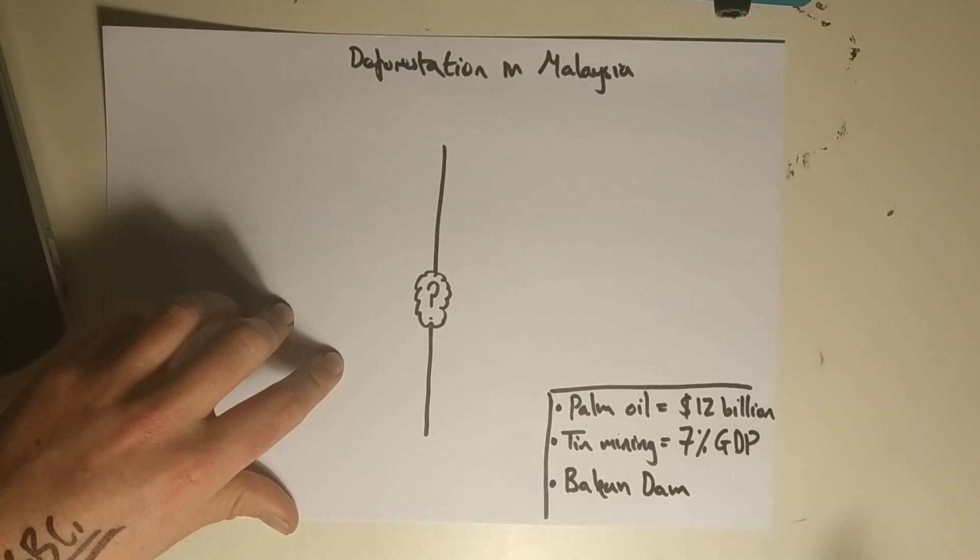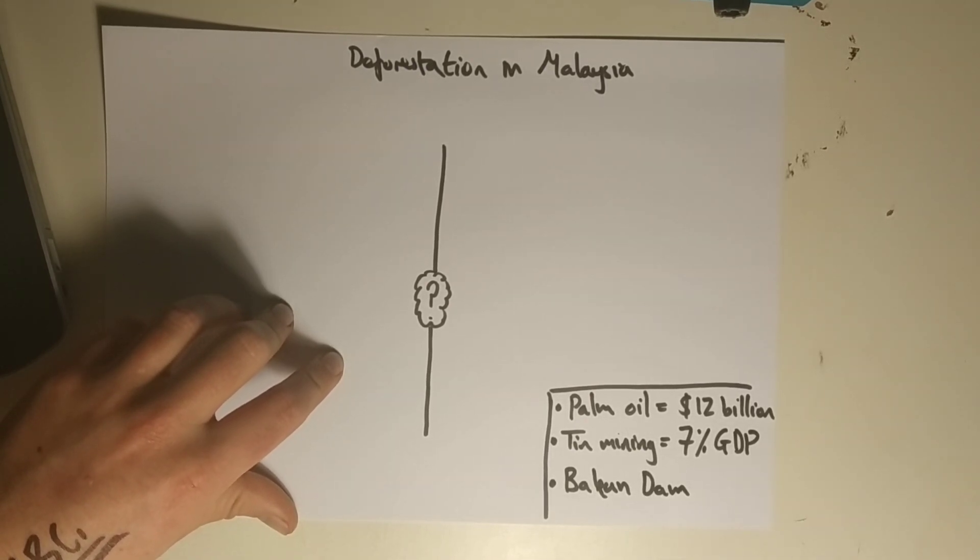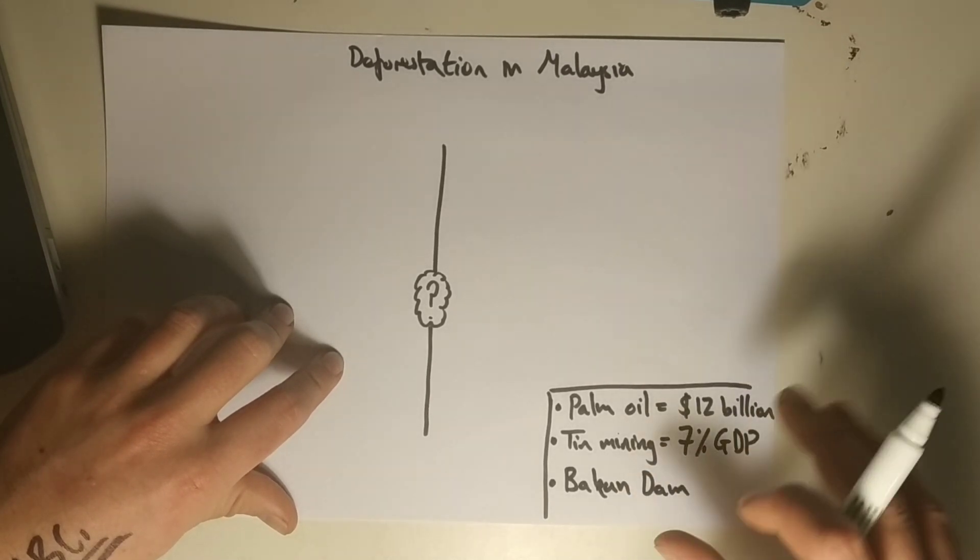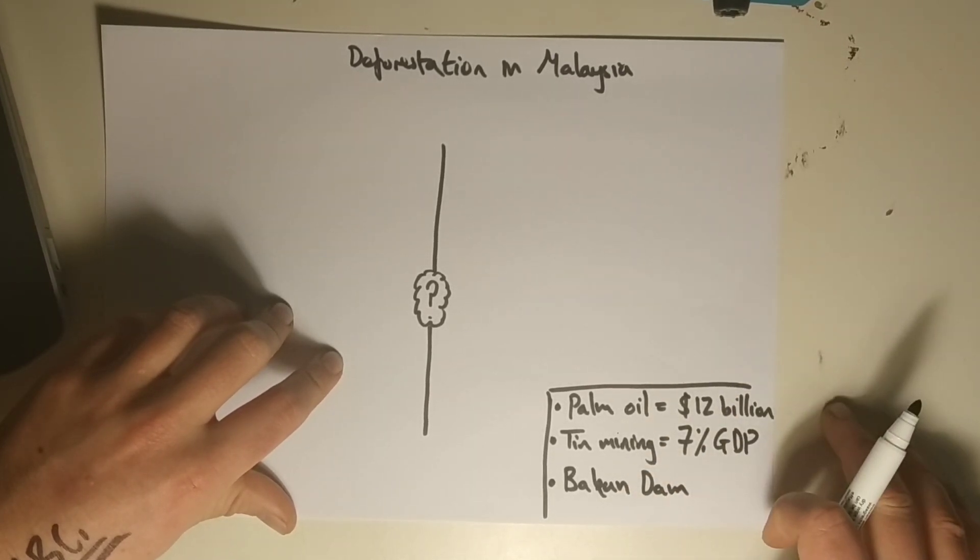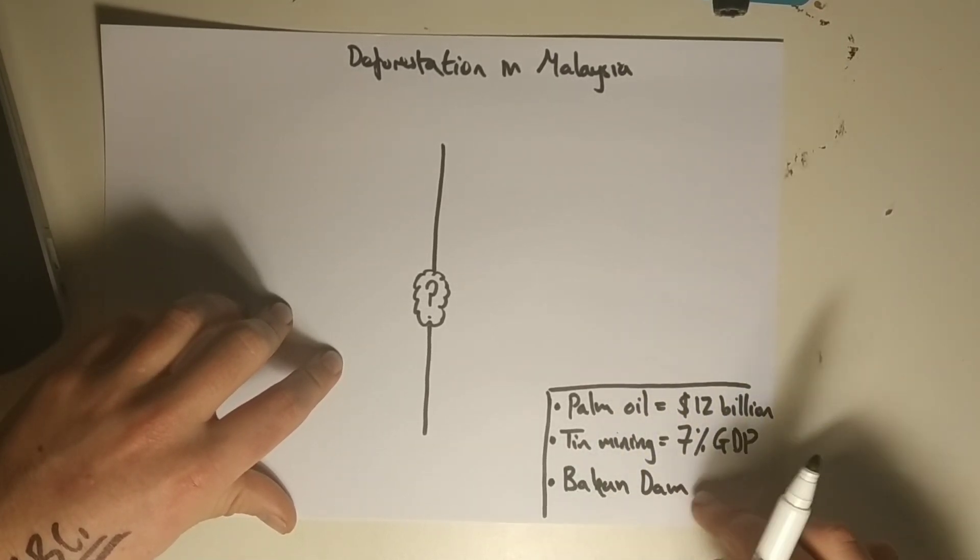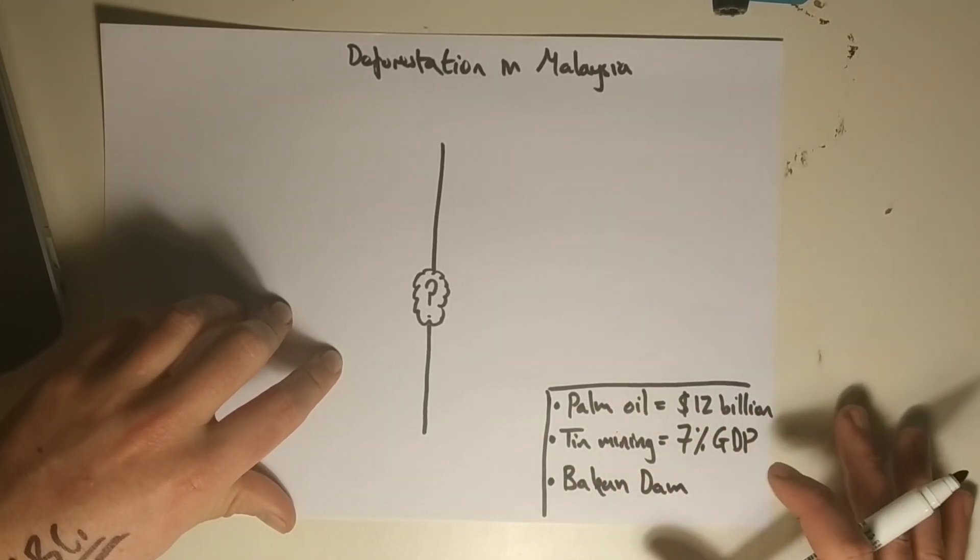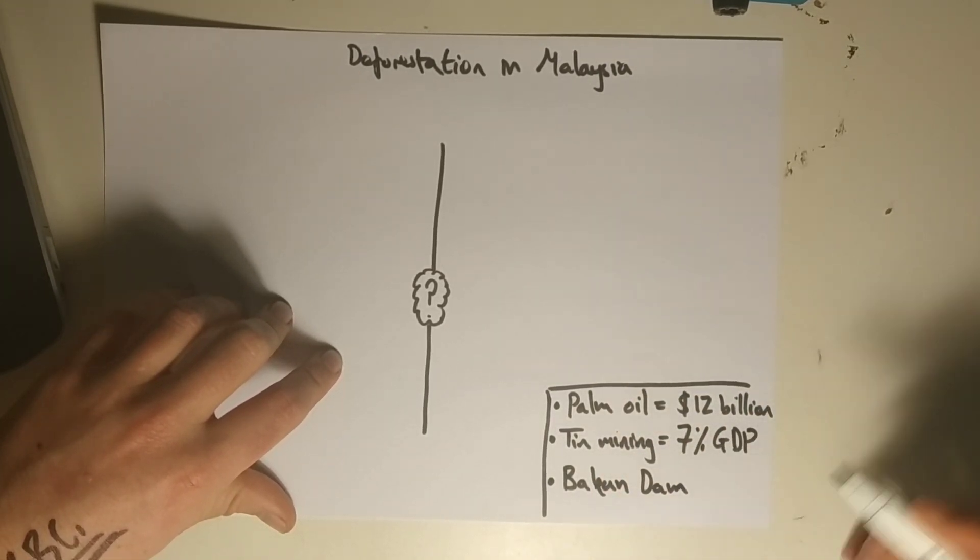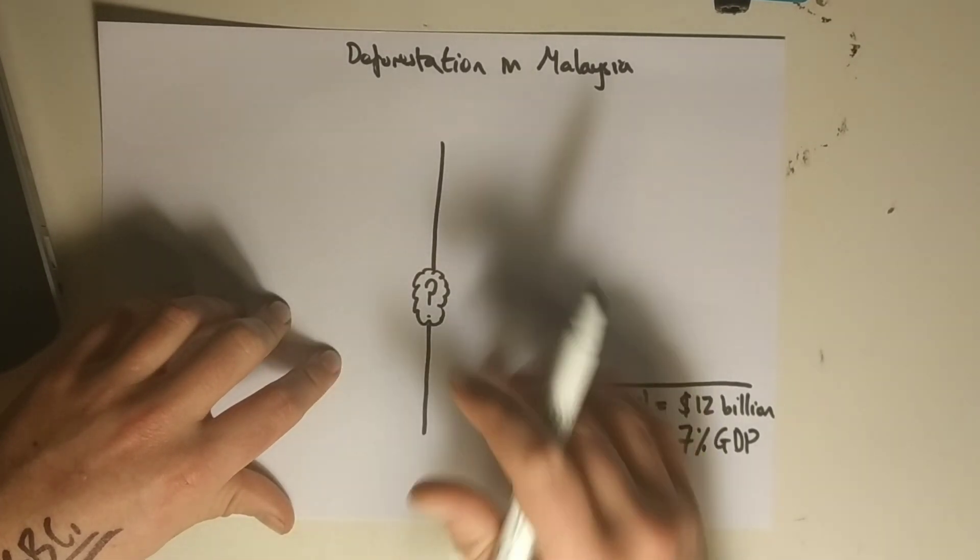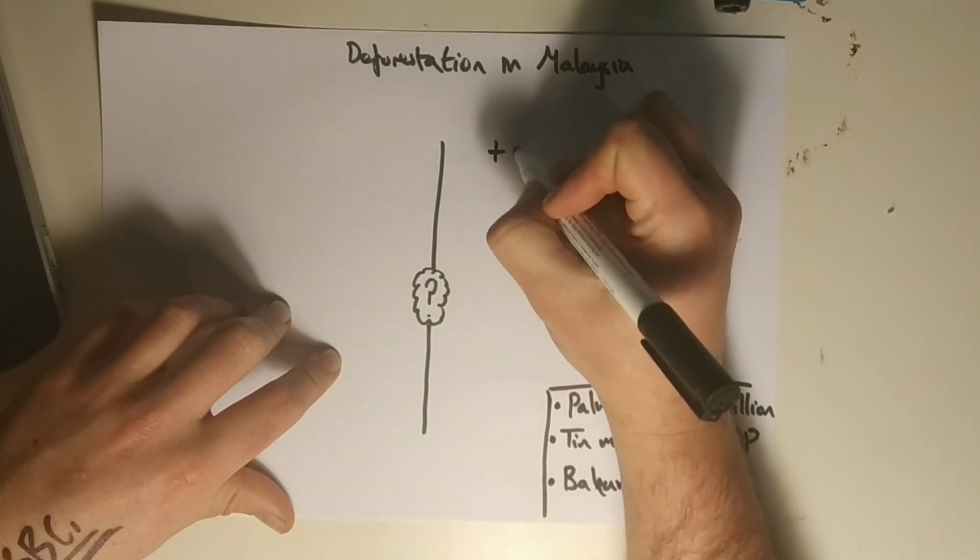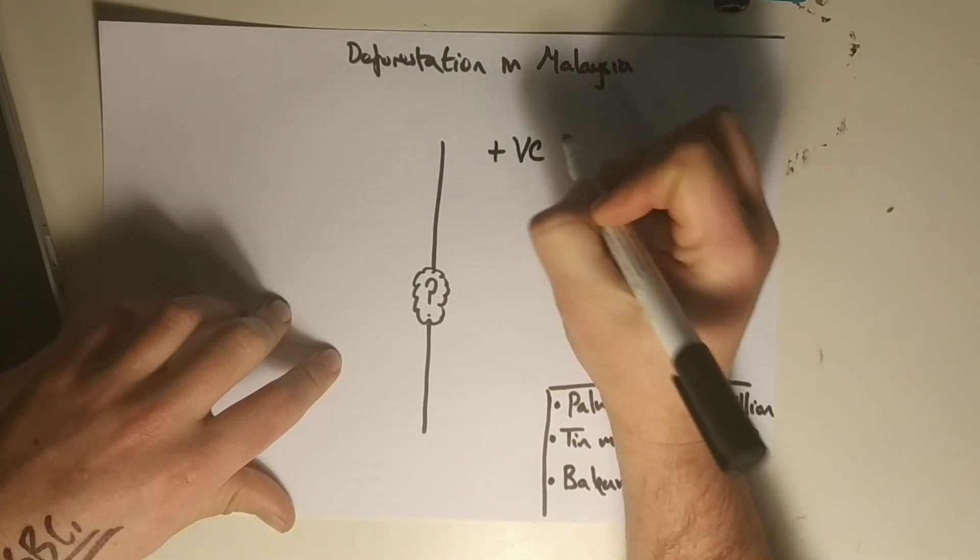So always be respectful of the fact that they are deforesting for economic reasons and in some respects some key social reasons as well. And remember as geographers, it's important to weigh up the positives and negatives and the reasons why these things are happening. So let's start on the positive side of things first.